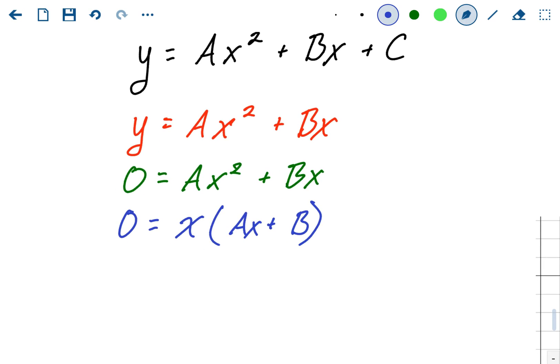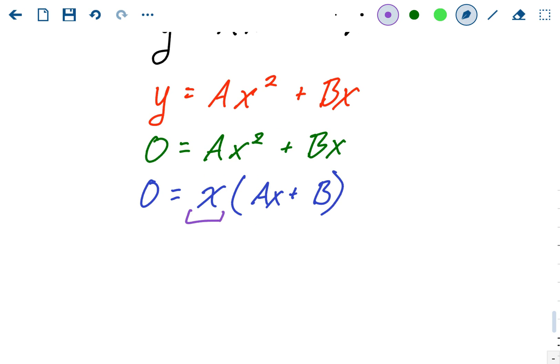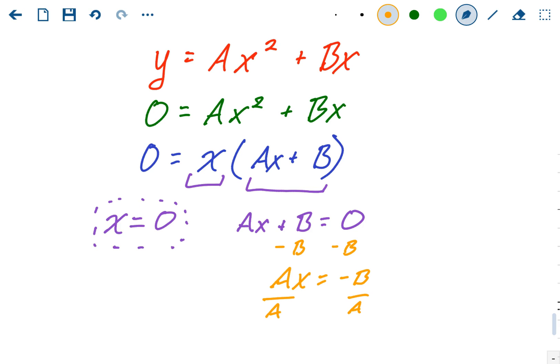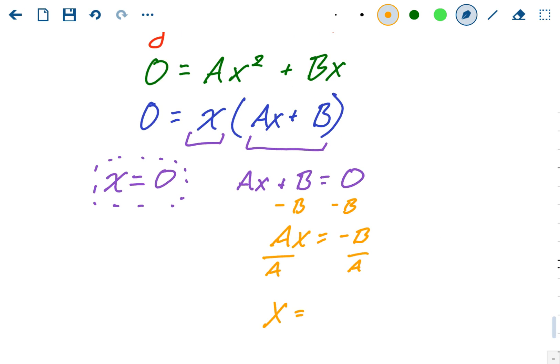So now we got two linear factors, we got x and we got ax plus b. Using the zero product property, we could split those up. We're going to split up both of these factors and set them each equal to zero separately. This will give us x equals zero. So x equals zero, that's one of our x-intercepts. And then you have ax plus b equals zero. We'll have to solve for x, so subtract b, divided by a. So our second x-intercept is at negative b over a.